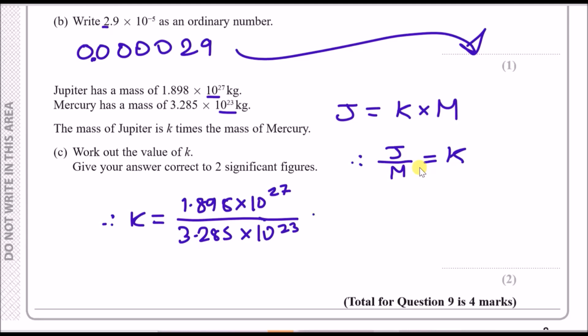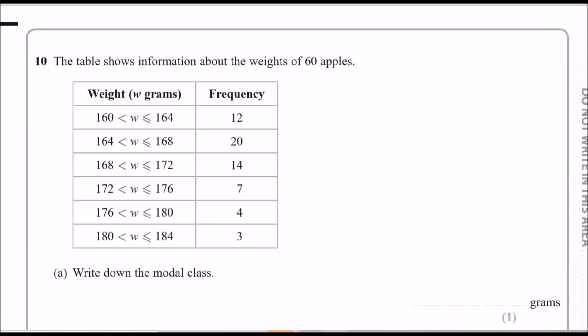In your calculator you'll probably get something like 5777.777... To round to two significant figures, highlight the first two digits and look at the decider — since 7 is large enough, you round up, giving 5800. So Jupiter is approximately 5800 times bigger than Mercury.